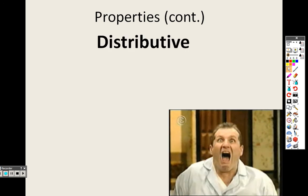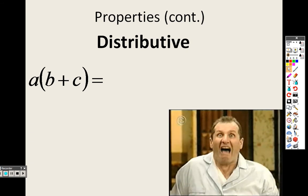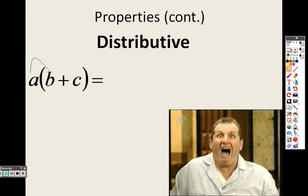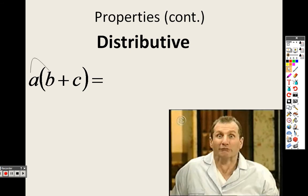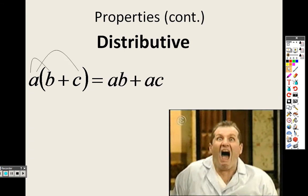The last property here that we have is the distributive property, and you do know this one from Algebra 1. We definitely went over this, but what this is saying is you take whatever is on the outside and you multiply it. So A times B and A times C.